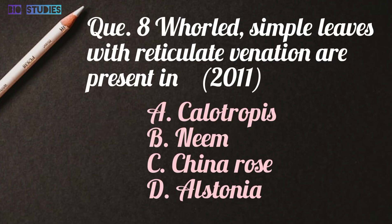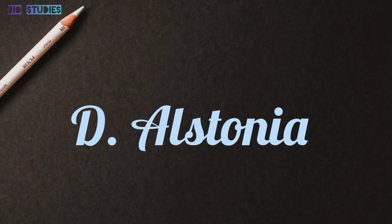Next: simple leaves with reticulate venation are present in — Calotropis, neem, China rose, or Alstonia. Answer is D: Alstonia.